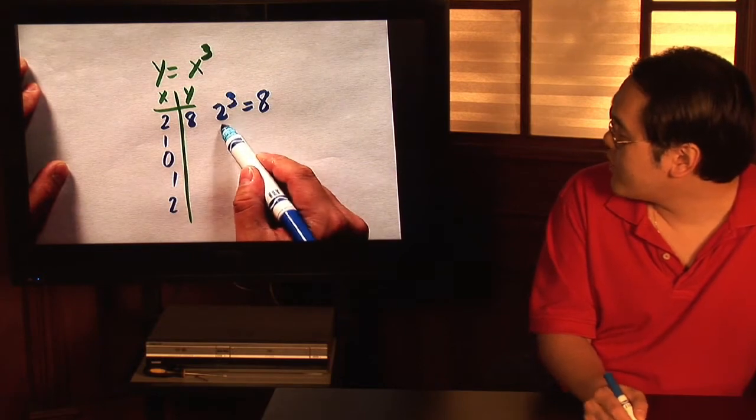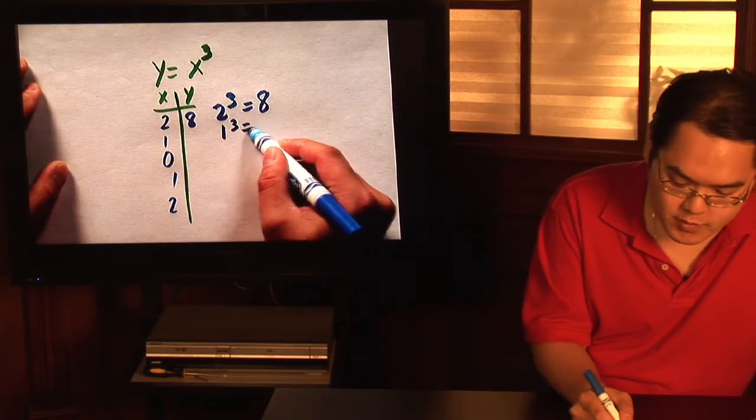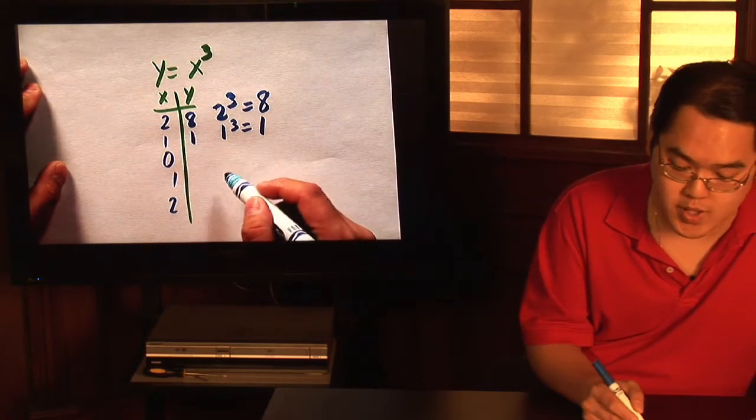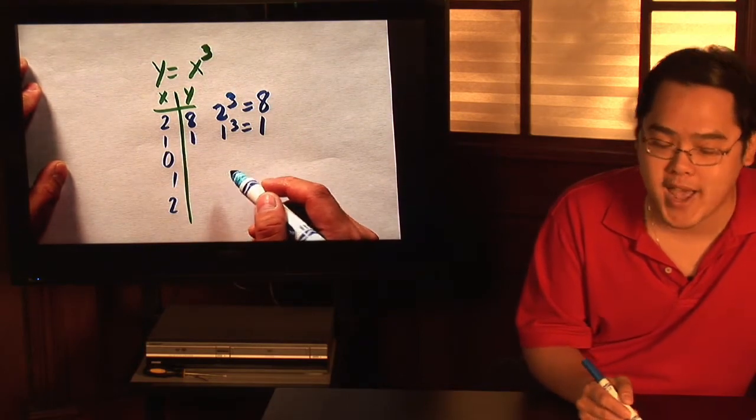When x is 1, you're going to have 1 cubed, which is going to equal 1. So when x is 1, y is 1. Sometimes the x and y coordinates match.